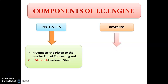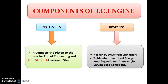The next component is the governor. Just as in turbines the governor is used to regulate speed for varying load conditions, in the case of an engine the governing mechanism or governor is also used. It is run by a drive from the crankshaft, and the main function of the governor is to maintain the quantity of charge to keep the engine speed constant for varying load conditions.